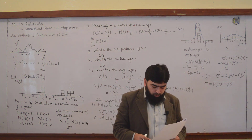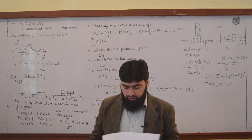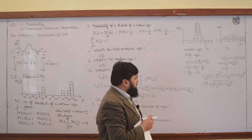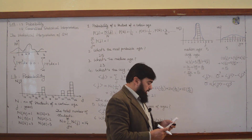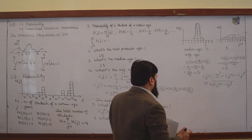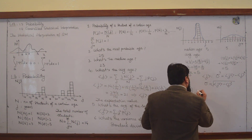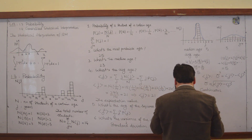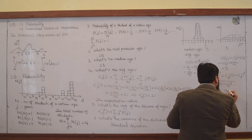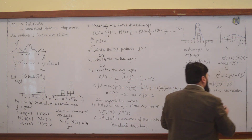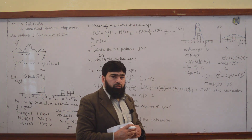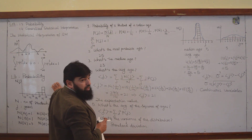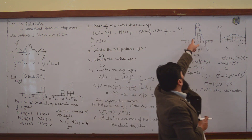And this gives you the spread around the average value. Now we come to our quantum mechanical terms, which involve continuous variables. In quantum mechanics we will not deal with discrete distributions like this — our distributions will be continuous.